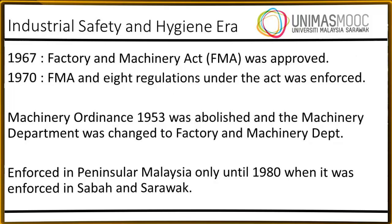In the industrial safety and hygiene era, the Factory and Machinery Act, also known as FMA, was approved in 1967. In 1970, the FMA and its regulations under the Act were enforced. The Machinery Ordinance 1953 was abolished and the Machinery Department was changed to the Factory and Machinery Department. This was enforced in Peninsula Malaysia only until 1980, when it was extended to Sabah and Sarawak as well.